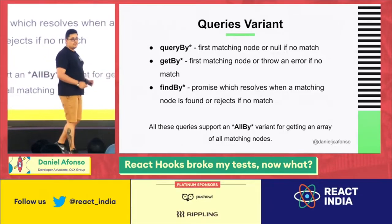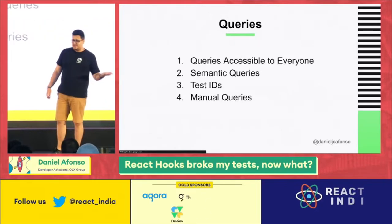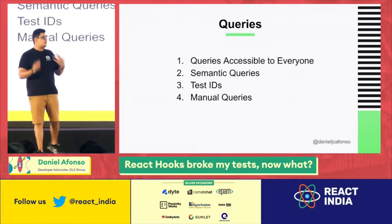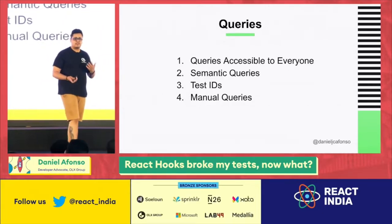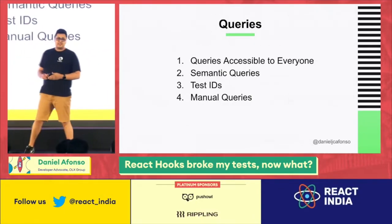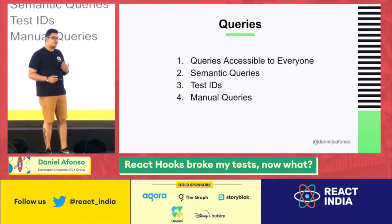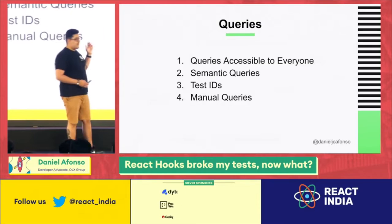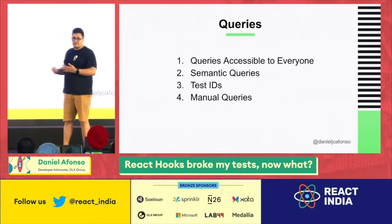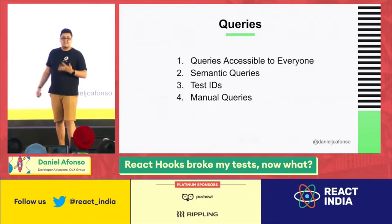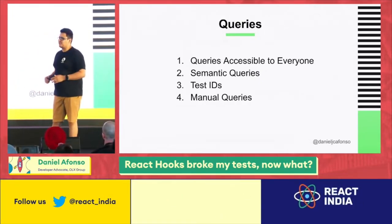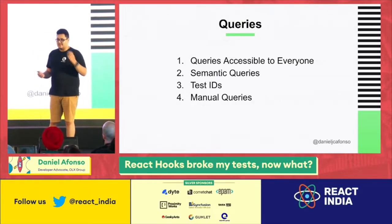These variants are appended with something belonging to the query family. The recommended approach is to always focus on queries that mostly reflect the user experience. Here we have the query family: queries accessible to everyone, which mostly reflect the experience of all users; then semantic queries; then test ID queries, which start to reflect some implementation details but in a controlled way; and then our escape hatch — manual queries — which you should probably never use, but I'll show them so you're aware.